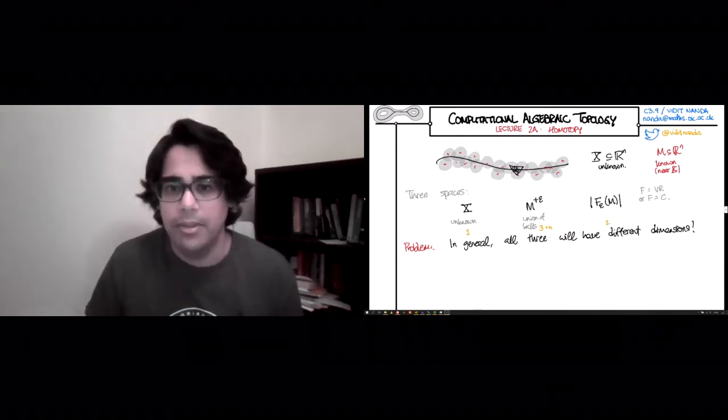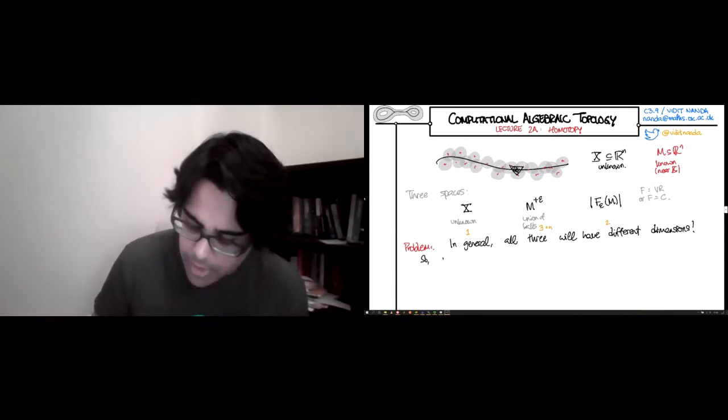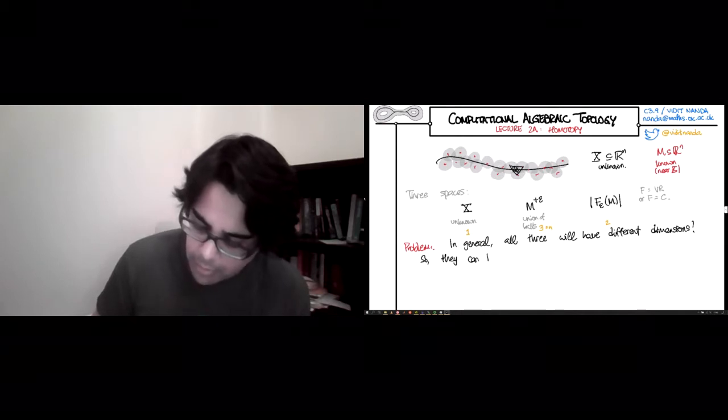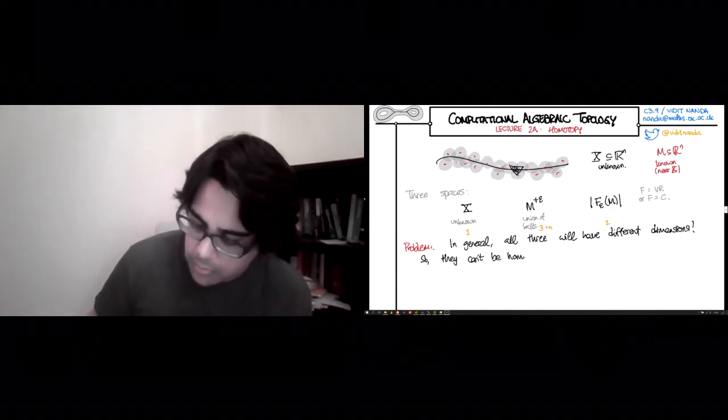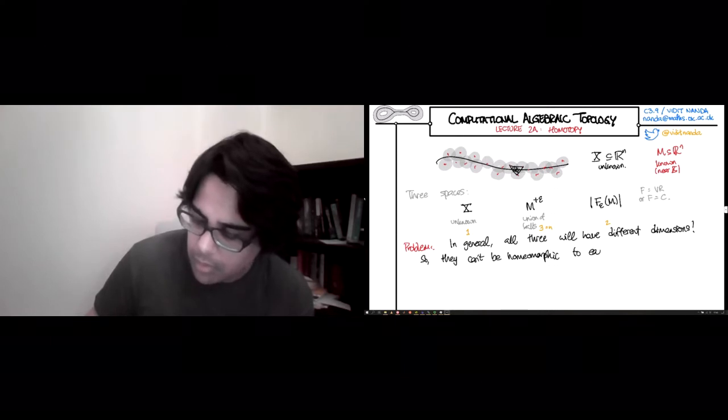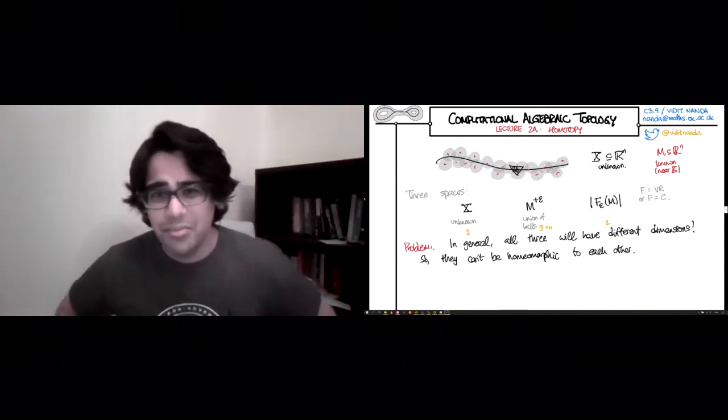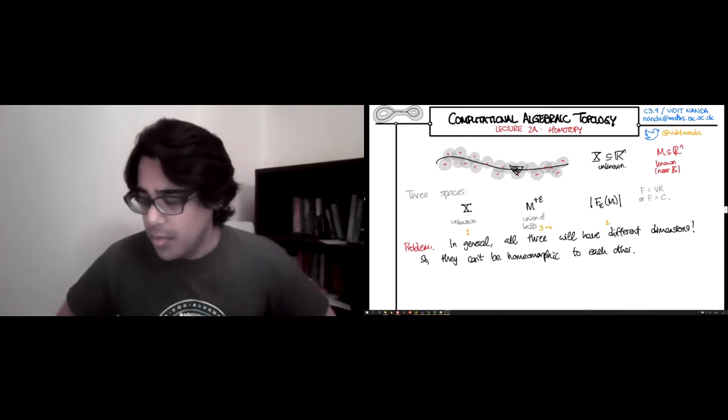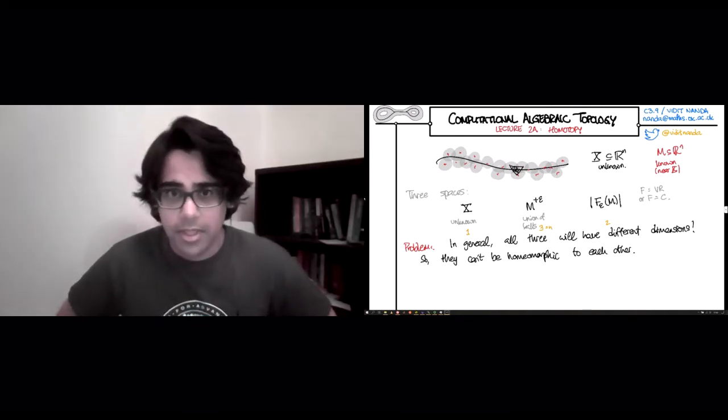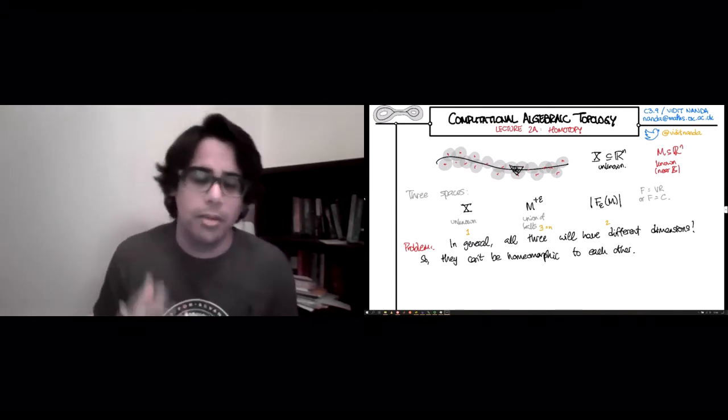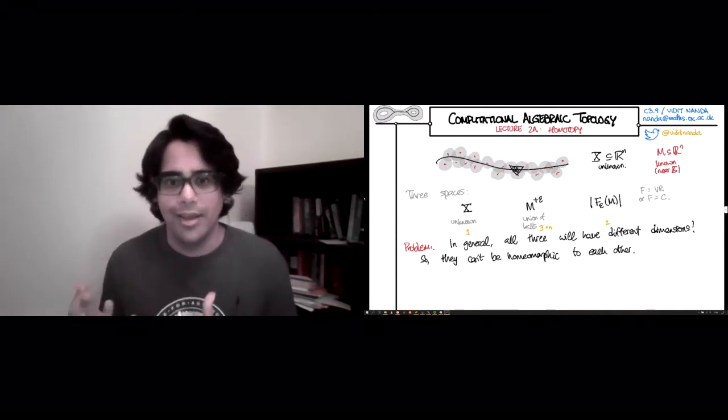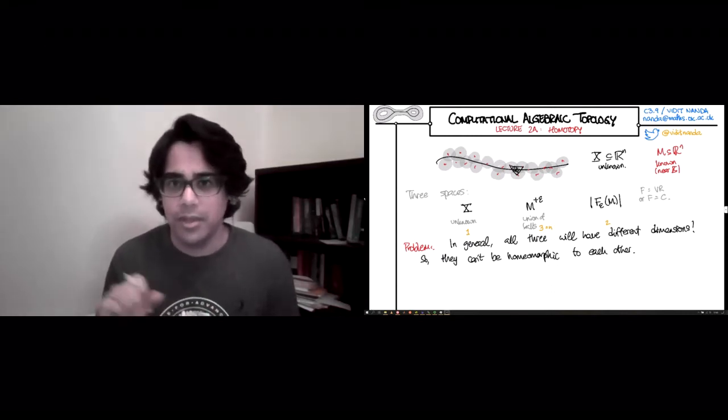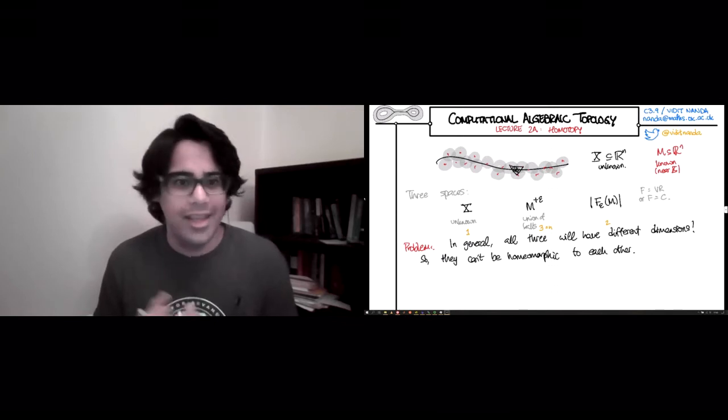And one of the bad things that happens is they cannot be homeomorphic to each other. They can't be homeomorphic. So this is unfortunate. If you've only seen homeomorphism in your point-set topology courses, assuming you've had a topology course, this is a very, very unsatisfactory state of affairs.